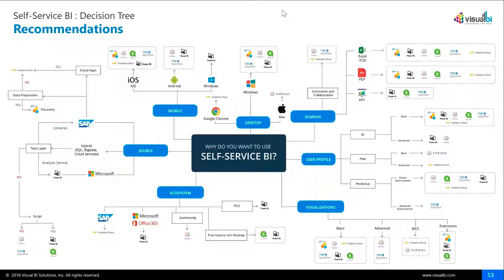I am very pleased to share that we have put together a decision tree to help you all navigate some of this. I don't want to spend too much time on it as we are already close to the hour and the webinar slides will be shared. I just want to briefly touch on how you can navigate: if you want to be just a desktop user or just a mobile user — some of our recommendations are there. These are just our recommendations; if you see any inaccuracies, let us know. We thought: how do we condense the whole webinar into a single diagram? This is it.